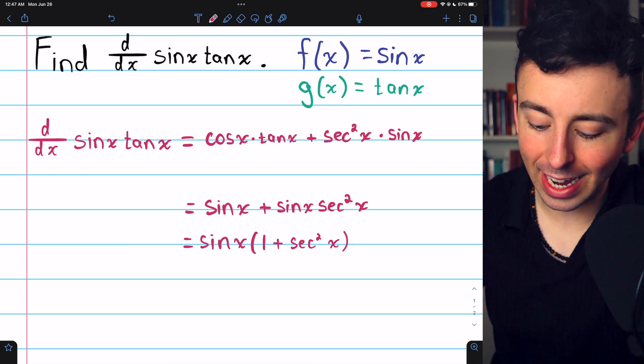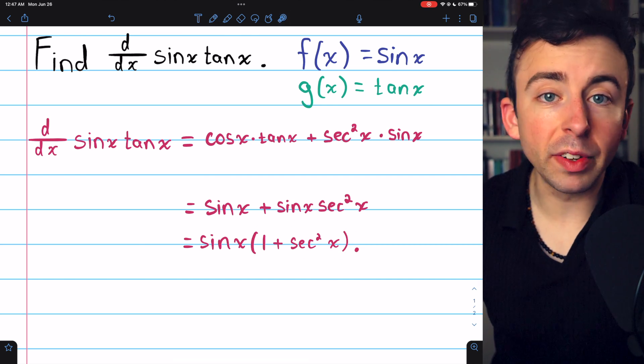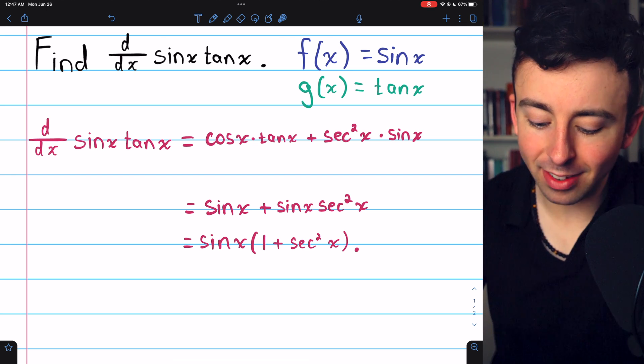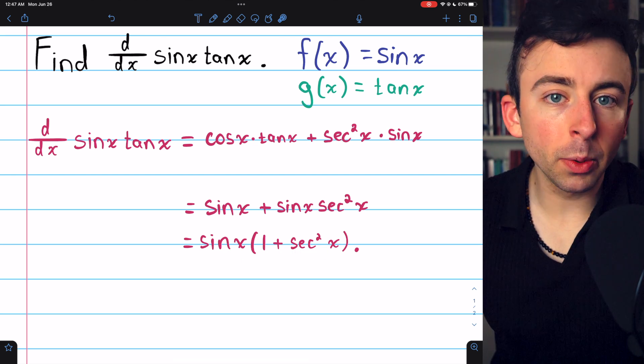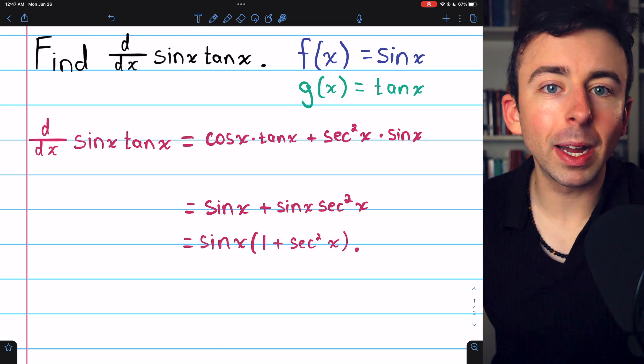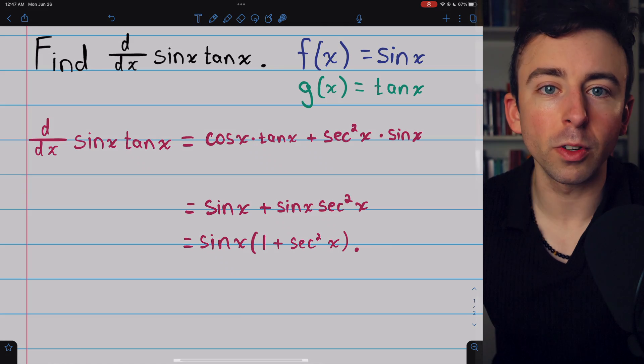This here looks like an identity, but it's not. This is a reasonable place to stop. The derivative of sine x tan x is sine x times one plus secant squared x. Let me know in the comments if you have any questions, and check out my calculus one exercises and calculus one course playlists in the description for more.